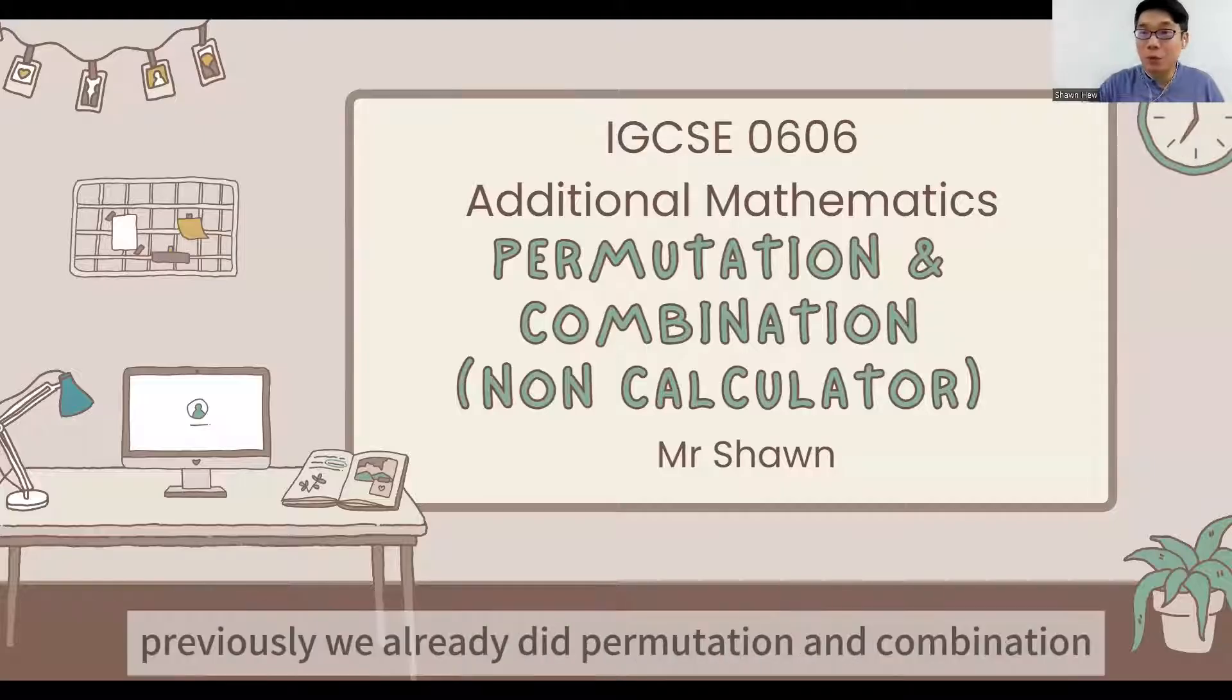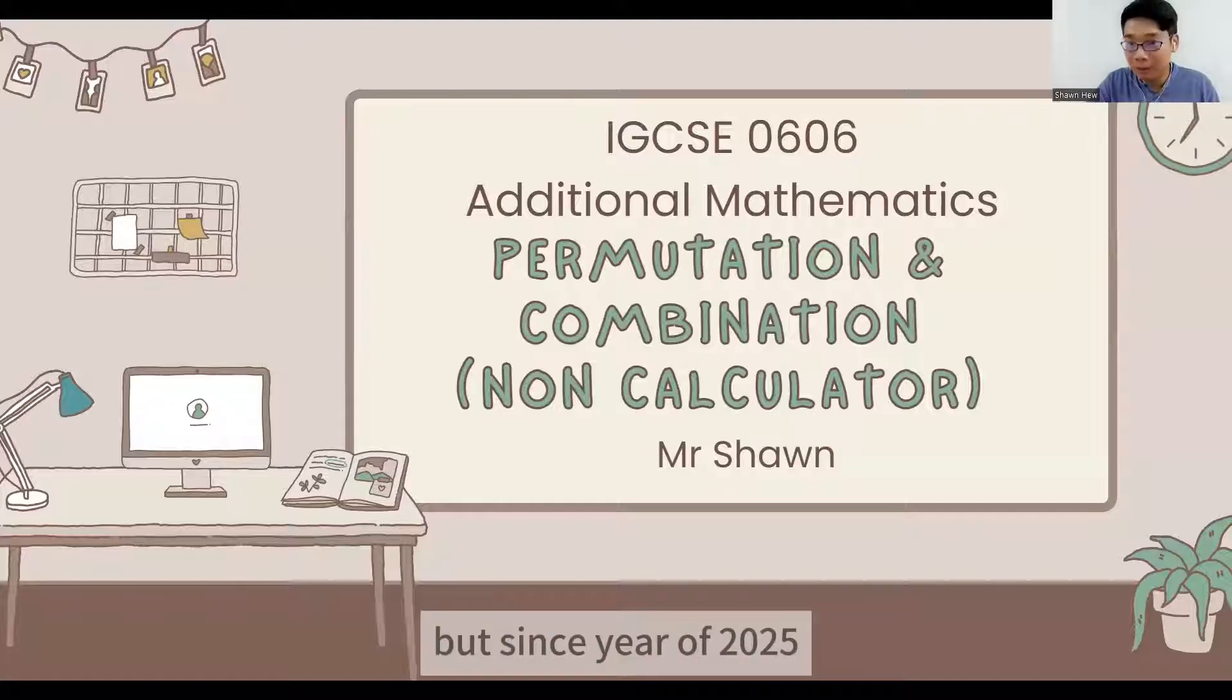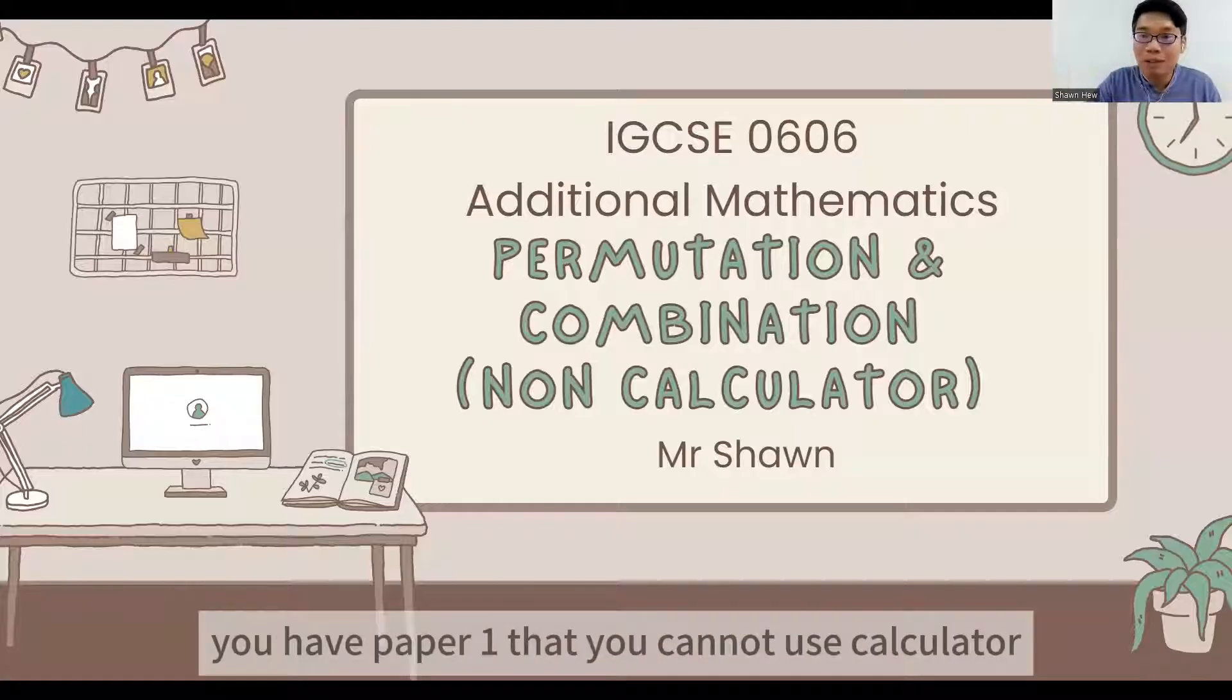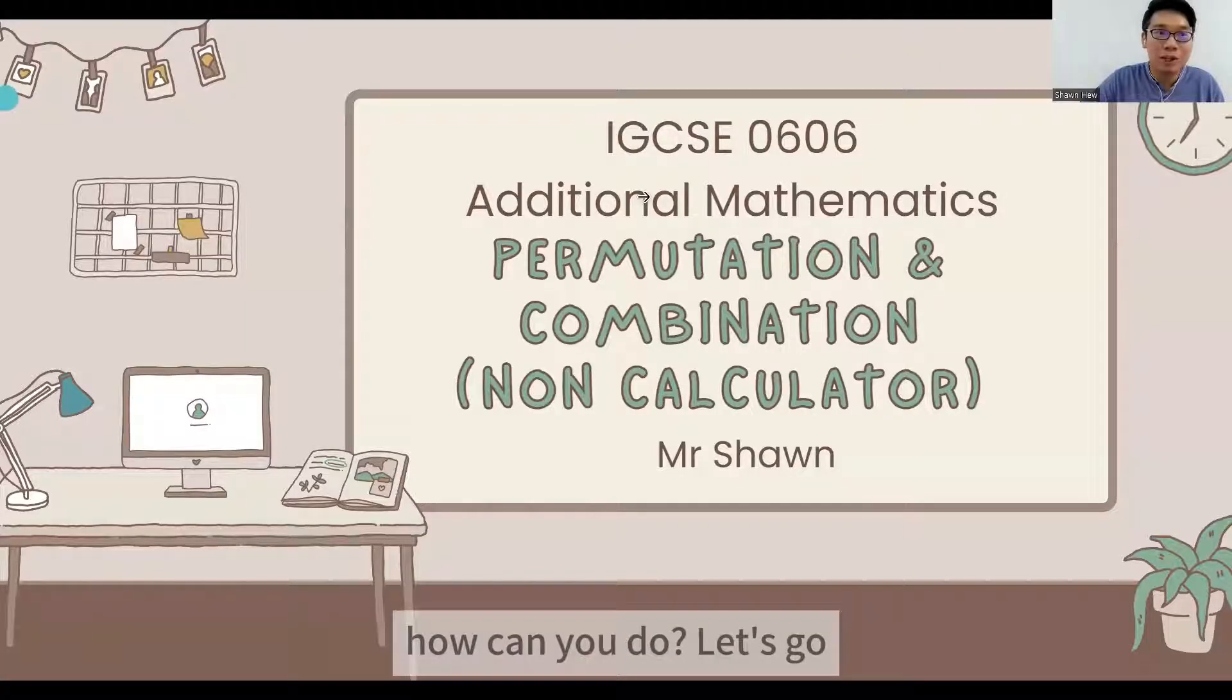Hello everyone. Previously we already did permutation and combination that we can use calculator. But since 2025, you have paper 1 that you cannot use calculator. So if permutation combination question appear in paper 1, how can you do? Let's go.